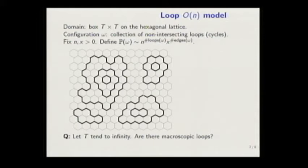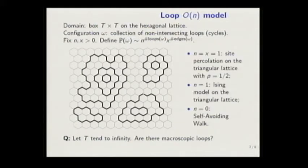So particular cases which are of interest are, well, n equal x equal 1. This corresponds to the percolation. Why? Because in this case, in fact, all configurations are equiprobable.